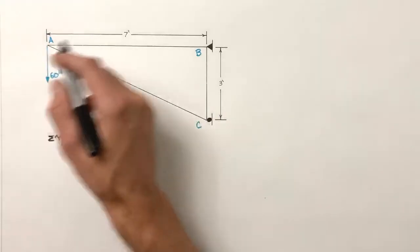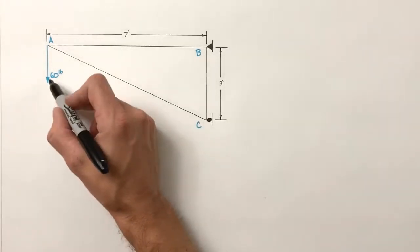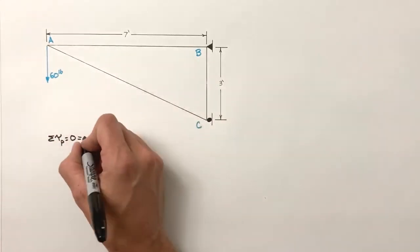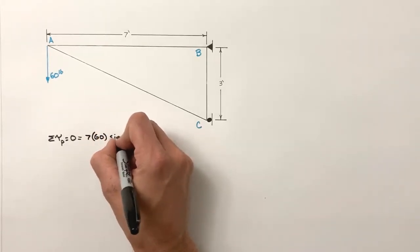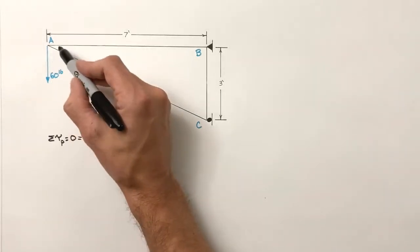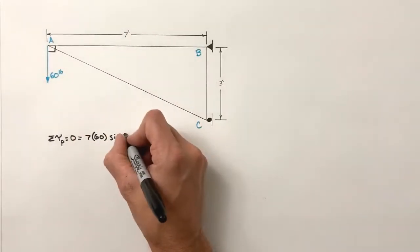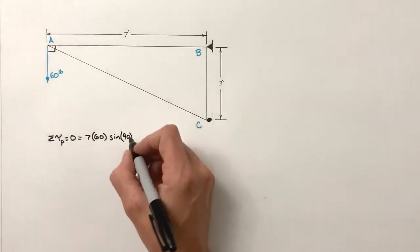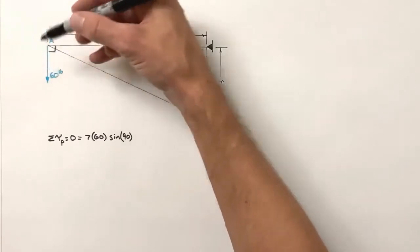So we're going to go through and do all our math here. Looking at torque, let's start with the load. We've got 60 pounds acting at a radius of 7 feet. So 7 times 60 times the sine of the angle between the 60 pounds and the 7 feet. Realize these are at a right angle to each other, so it's 90 degrees.